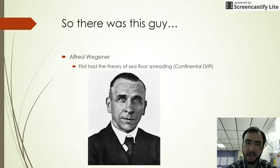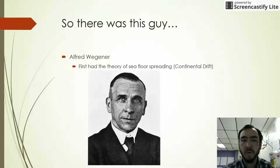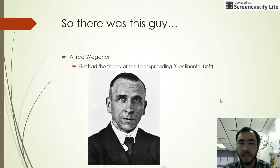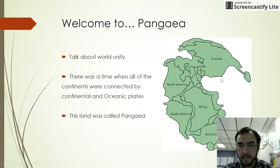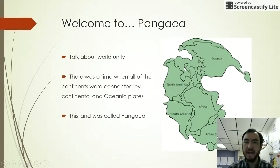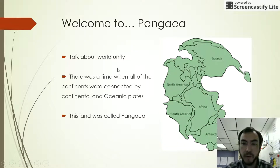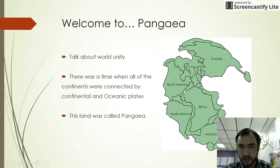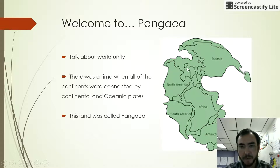There was also this guy in the early 1900s — his name was Alfred Wegener. He first came up with the theory of seafloor spreading. What he did is he looked at all of the continents and said, 'You know what, they look like they might fit together, or they might have fit together at one point.' If you look especially at North America along the eastern seaboard, where it would maybe have fit with Africa, or how Africa might have fit with South America, or how Eurasia might have fit in as well.